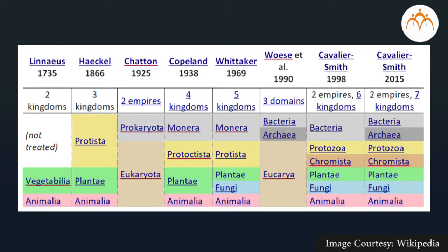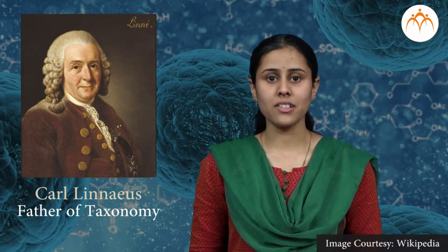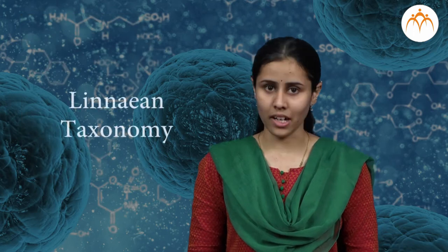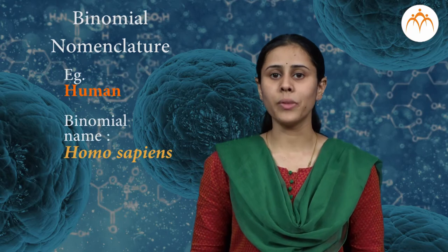Systems of classifying organisms have evolved over the years, and from the chart you can see that scientists have divided the organisms into different kingdoms. Among these scientists, the Swedish botanist Carl Linnaeus is regarded as the father of taxonomy, as he developed a system known as Linnaean taxonomy for categorizing organisms and binomial nomenclature for naming organisms. Scientists are still refining the system of classification and are now relying on analyzing the DNA of organisms.